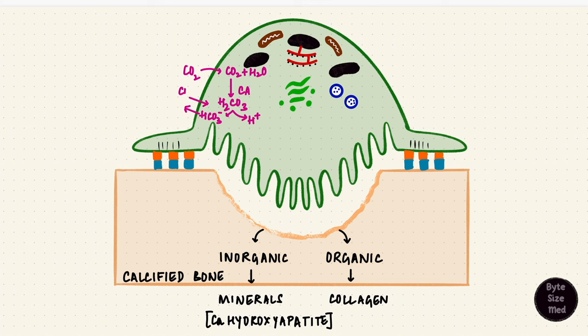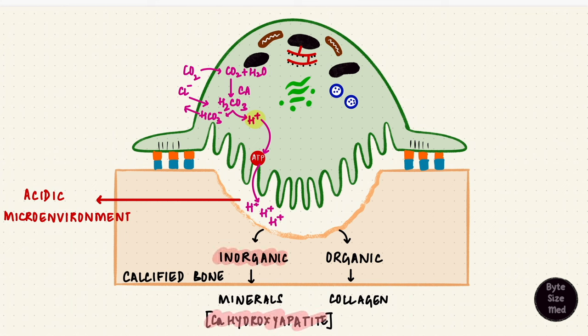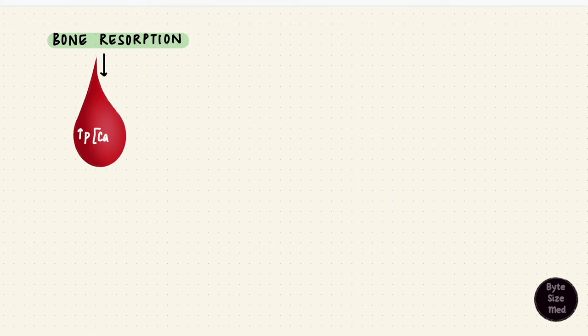Bicarbonate leaves the cell in exchange for chloride but what happens to the hydrogen ions? The hydrogen ions are pumped into the sub-osteoclastic zone by a hydrogen ATPase pump where it creates an acidic environment breaking down calcium hydroxyapatite. The calcium and phosphate ions are then released into the bloodstream. So bone resorption increases the plasma calcium levels by taking calcium out of the bone.